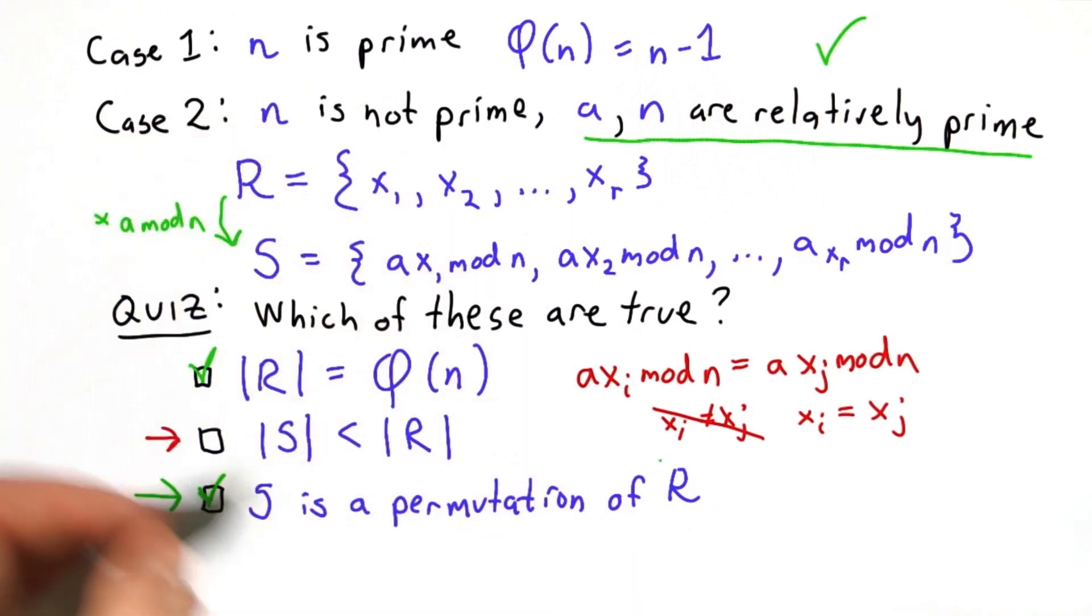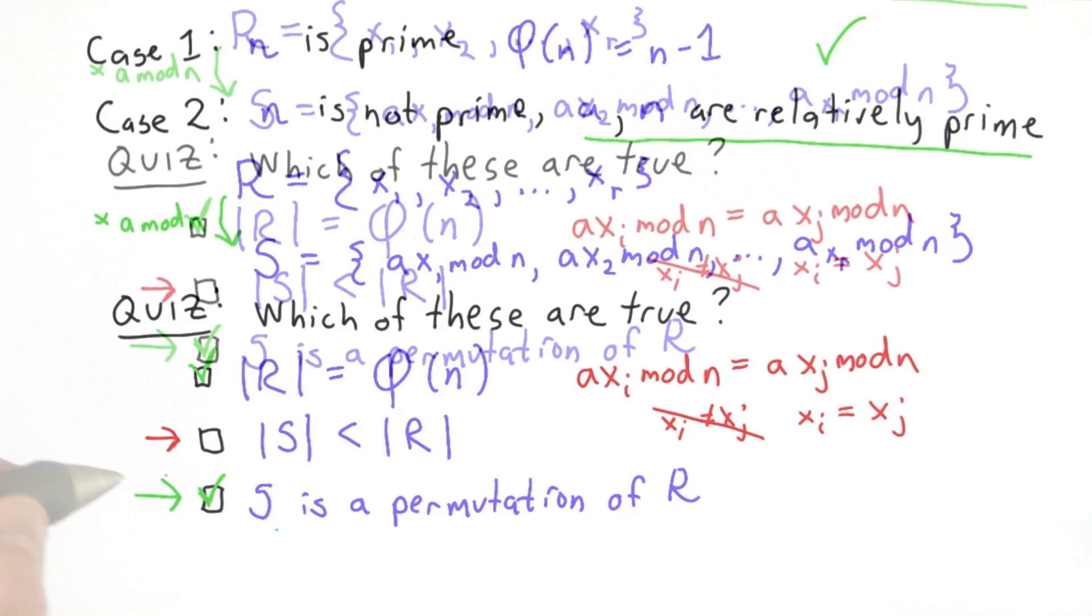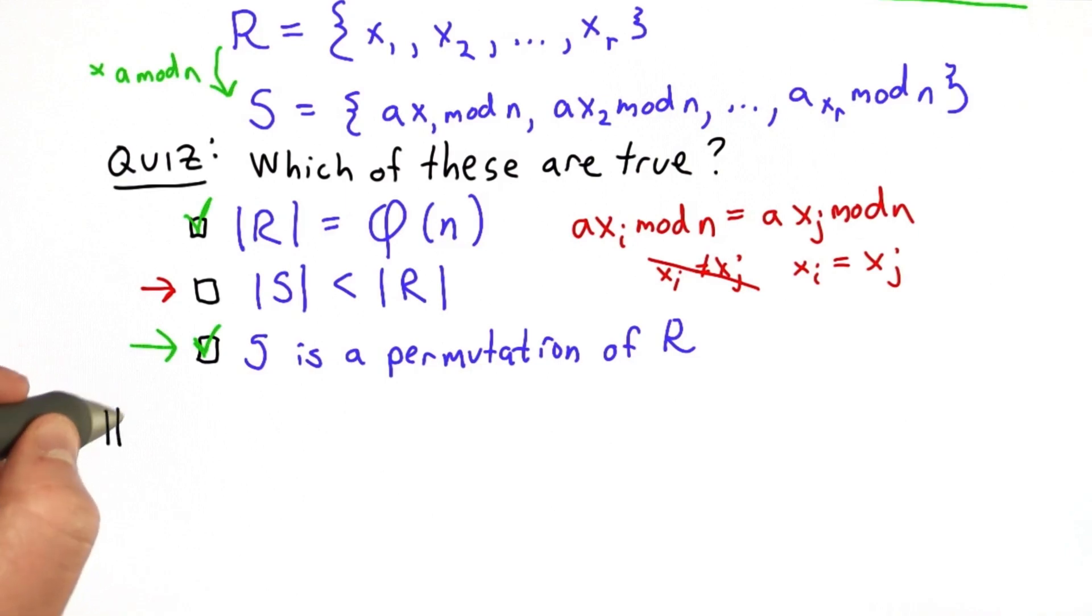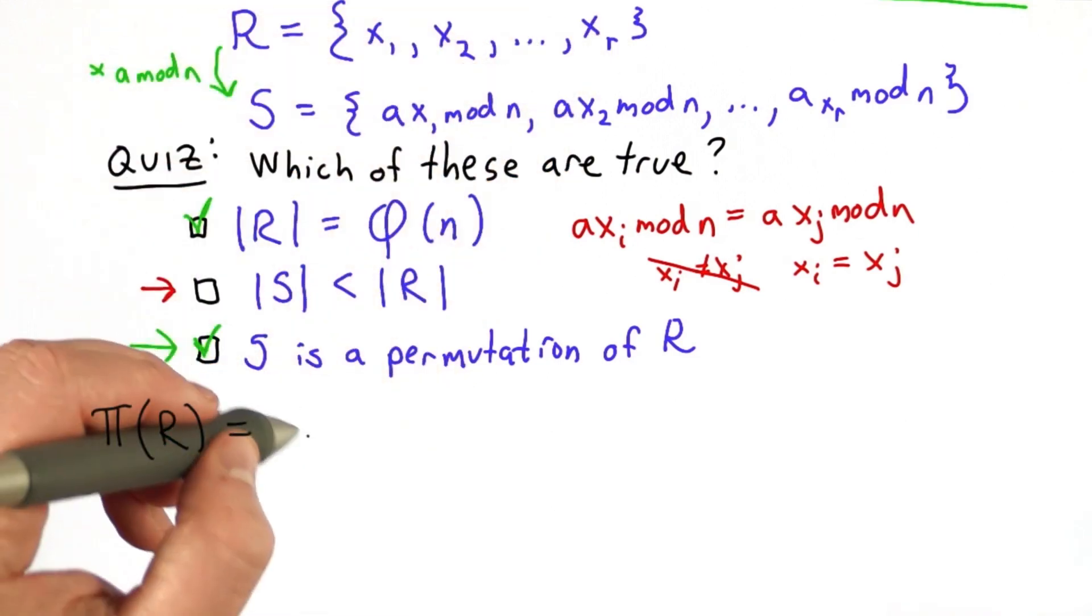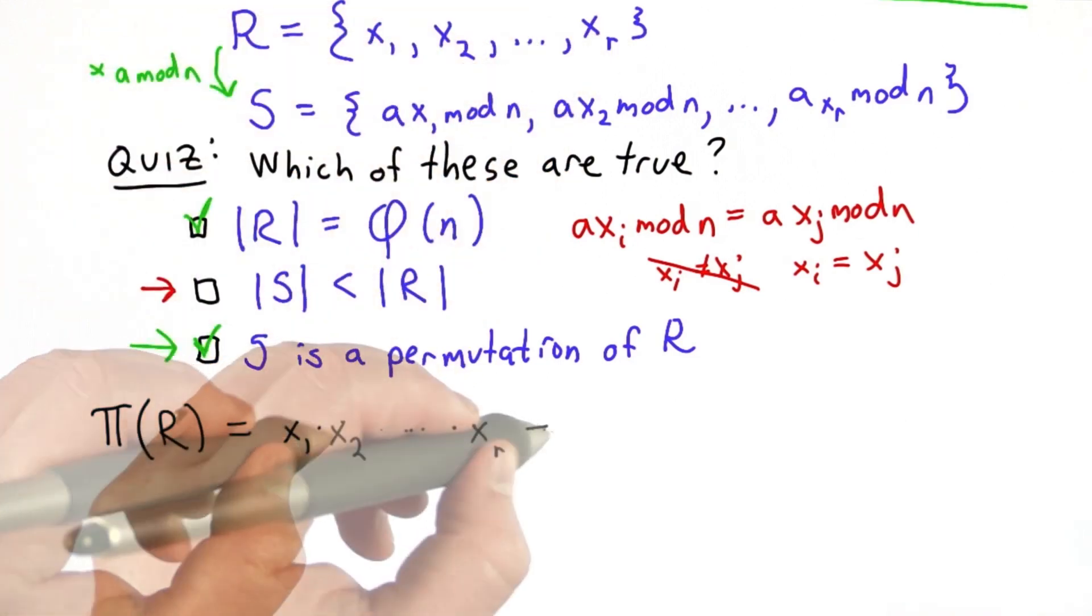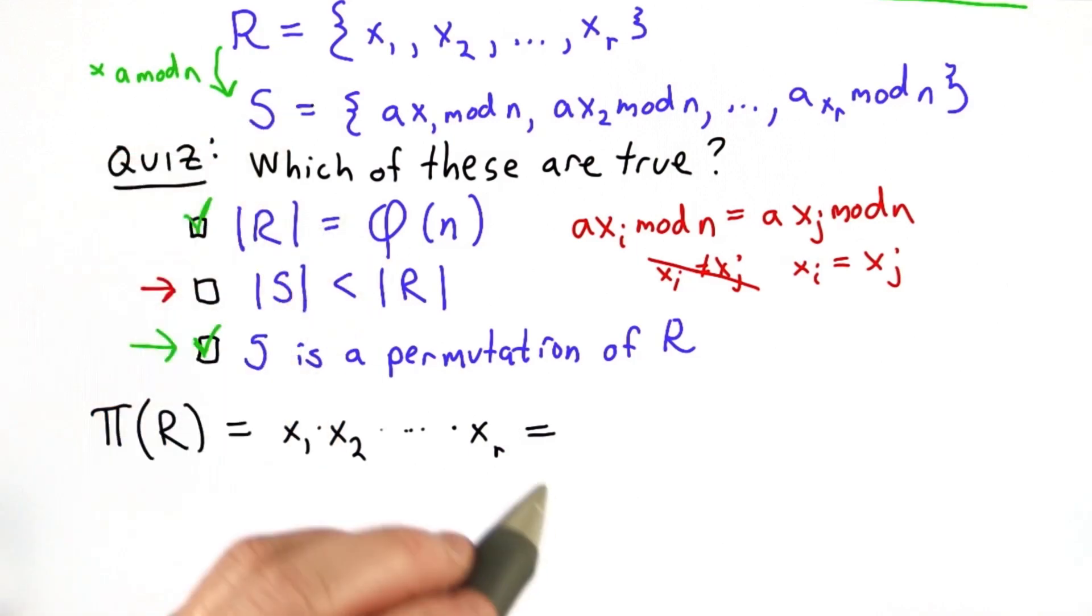Now we can use a similar idea to what we used in the proof for Fermat's little theorem. We can take the product of these two sets. Since we know they contain the same elements, we know their products are also equal. The product of r is equal to the xi's all multiplied together, which is equal to the product of s, which is equal to these values all multiplied together.